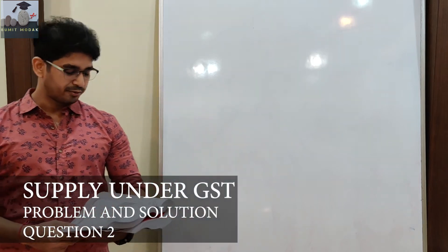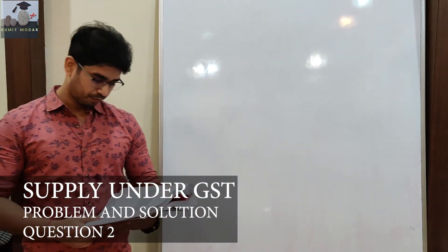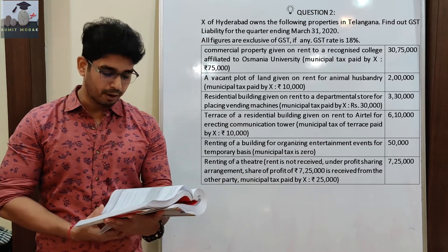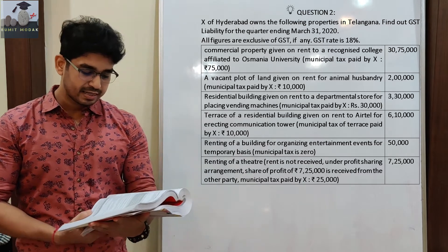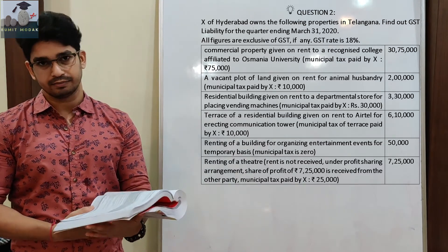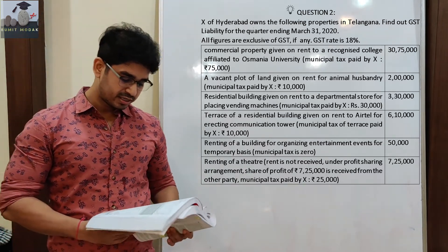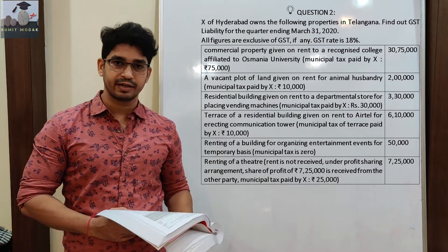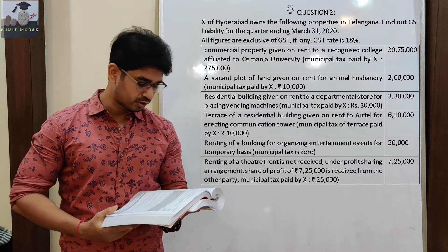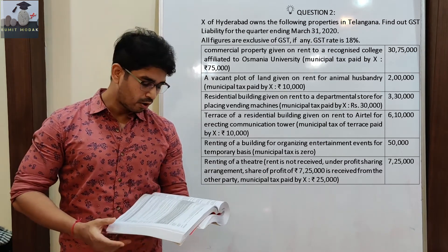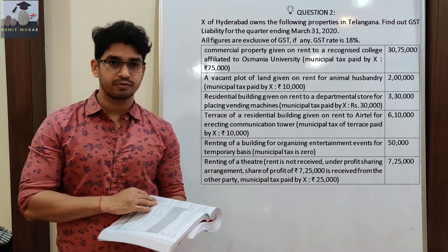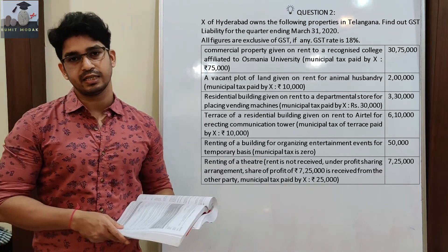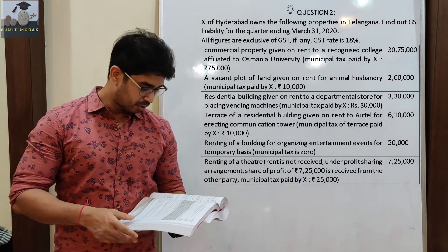Supply under GST, question number 2. X of Hyderabad owns the following properties in Telangana. Find out GST liability for the quarter ending 31st March 2020. All figures are exclusive of GST, if any. GST rate is 18%.